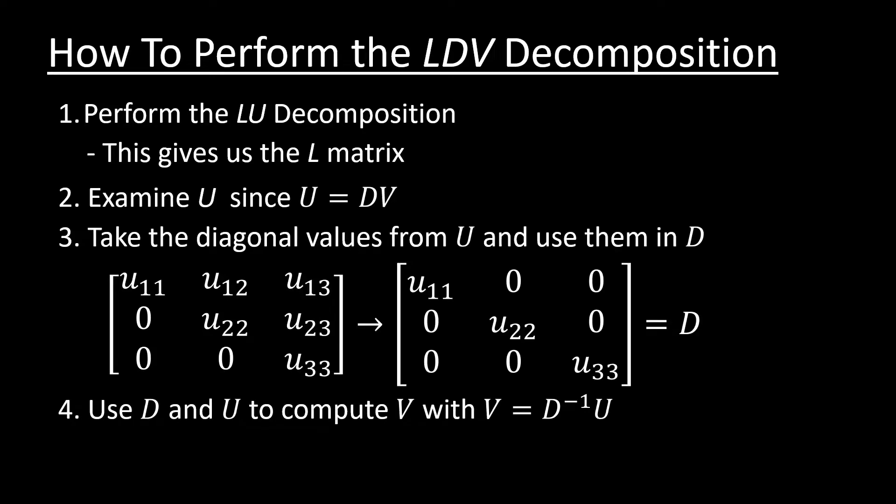Then, since computing the inverse of a diagonal matrix is very straightforward, we can just perform V equals D inverse U, or compute D inverse multiplied by U. Since we are getting U from the LU decomposition and we're setting up D, we can just invert it, and we can get our V matrix pretty simply and pretty easily. It's a simple four-step process.